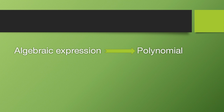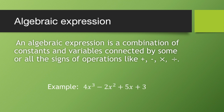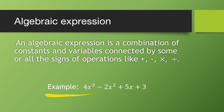An algebraic expression is a combination of constants and variables connected by some or all of the signs of operations like addition, subtraction, multiplication, and division. Here I have taken the example 4x³ - 2x² + 5x + 3. This expression is an algebraic expression because it combines constants and variables using addition and subtraction.